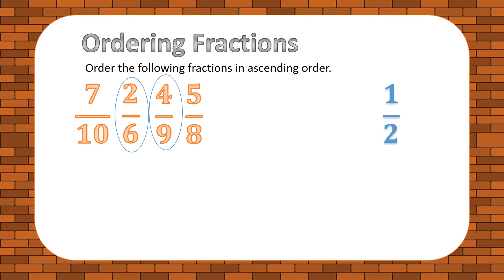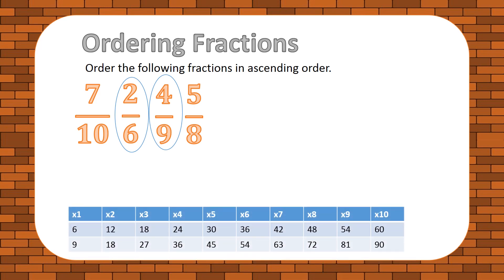To identify which is the smallest and which is the second smallest, we note that both fractions have different denominators — 6 and 9. So we find a common multiple for 6 and 9, which is 36. To make 6 into 36 we multiply by 6, and to make 9 into 36 we multiply by 4. Remember, similar to equivalent fractions, if we multiply the denominator we must also multiply the numerator by the same value.